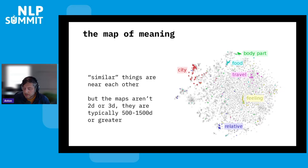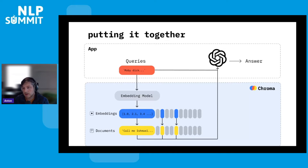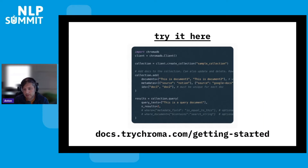Embedding models are typically very high dimensional, but the geometric properties of the vector spaces they produce allow us to do similarity-based retrieval in vector space. To put this together, you have a vector store or embedding store like Chroma. You take your documents and previous data set, embed it with Chroma and store it. Then you take your query, pass it through to the embedding model, retrieve the most relevant results according to the nearest neighbors of the query vector, and send both the query and the most relevant results to the large language model to produce an answer. This is very easy to do — with Chroma you can try it at trychroma.com, just a few lines of Python, and it's very easy to integrate into any LLM-based system.